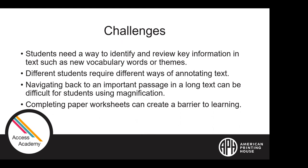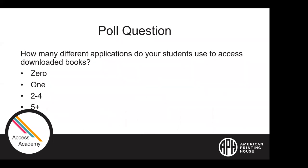Before we let Roger begin the presentation, we have one poll question. We want to know: how many different applications do your students use to access downloaded books? These can be ones specific to low vision and blindness or mainstream — it doesn't matter. The choices are zero, one, two to four, or five plus.